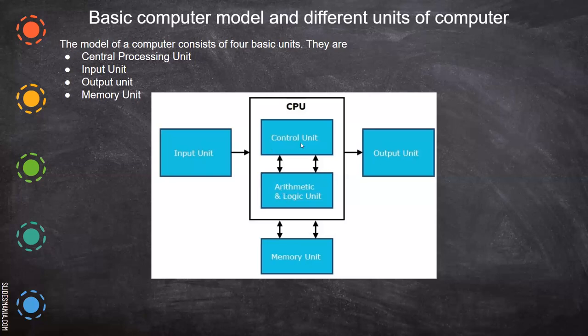The control unit helps in execution. It has a clock and many signals, which help in fetching data from the memory unit one by one. Because you write a program in a sequence — after the first step, the next step and so on. This is managed by the control unit, which has many registers. Using them, data is taken from memory one by one and then executed.